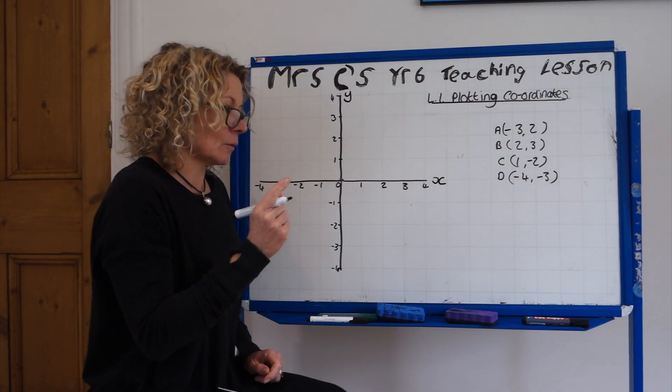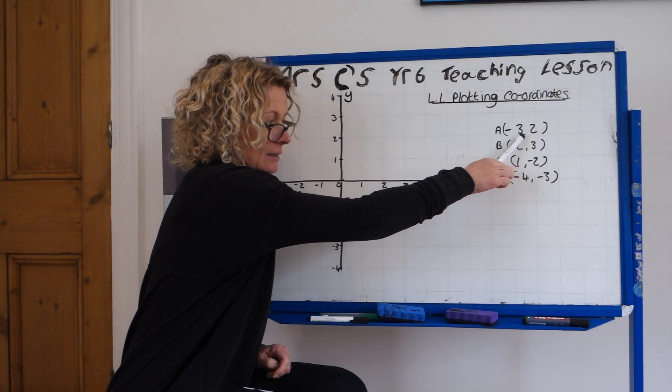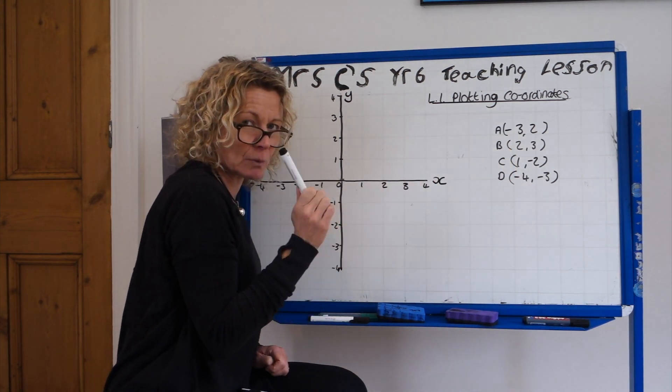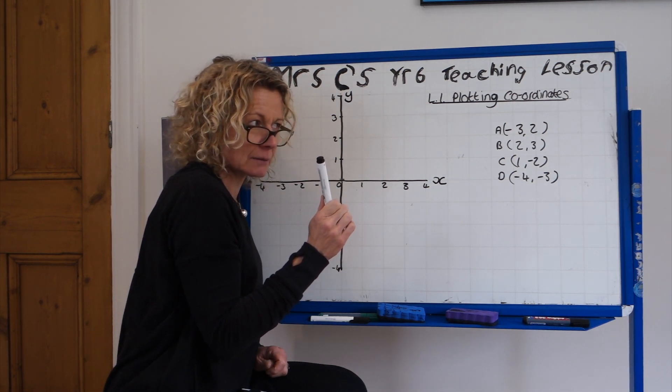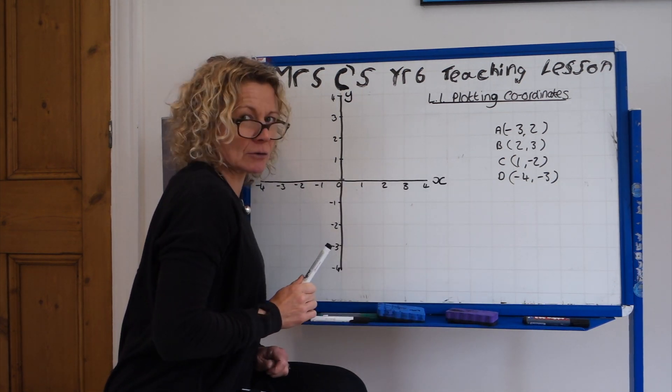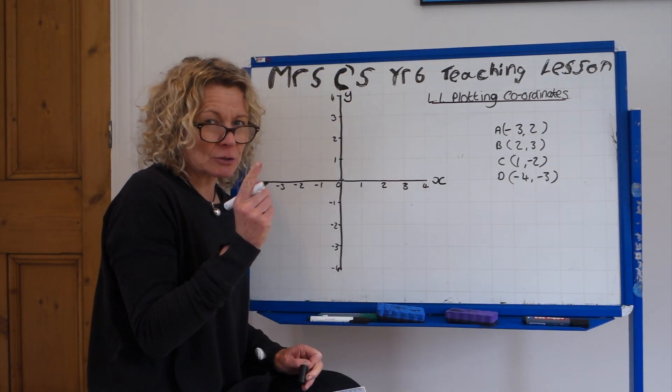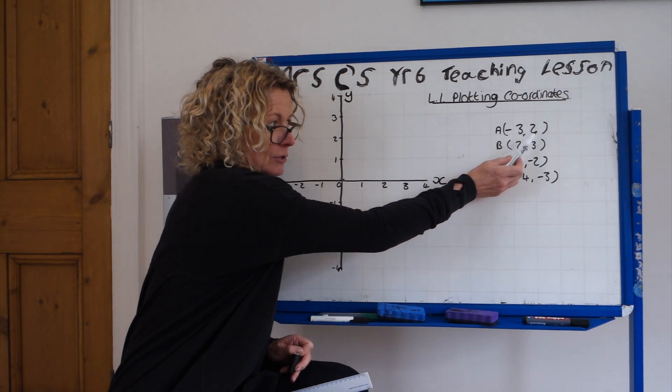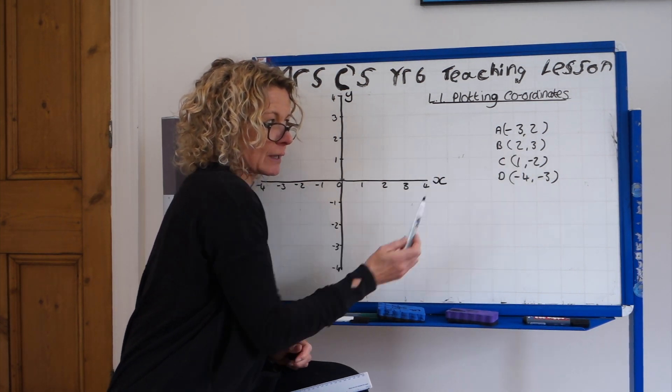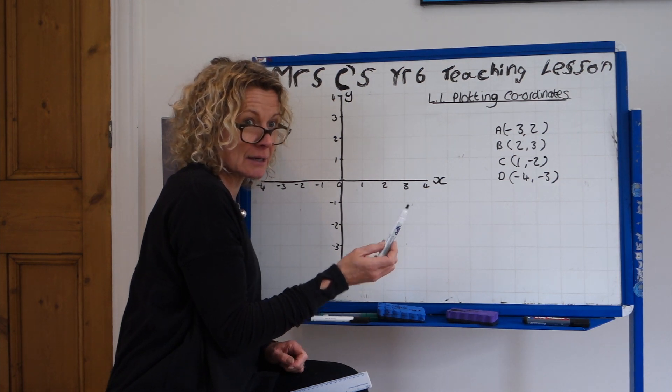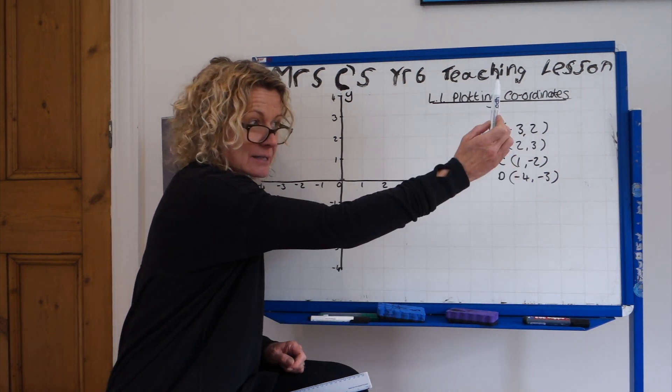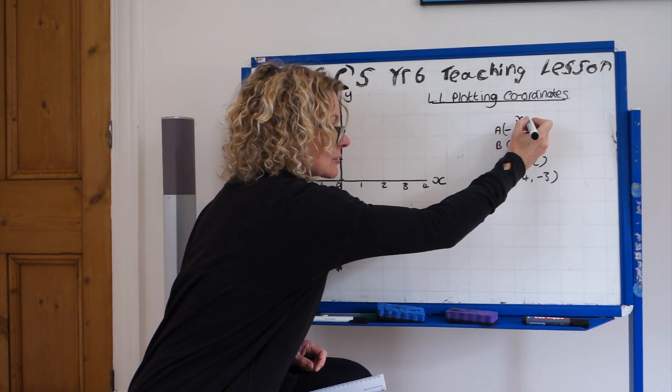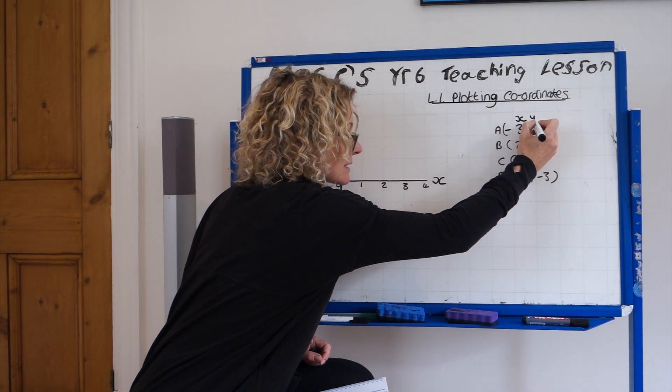Can you remember when you look at a coordinate like this, which value comes first? Is it the x or the y? In through the hallway and up the stairs. These are your coordinates, always in brackets, and this first one here is in through the hallway and up the stairs. x is always the first coordinate and then y is the second.